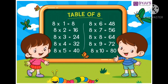Table of 8. 8 ones are 8, 8 twos are 16, 8 threes are 24, 8 fours are 32, 8 fives are 40, 8 sixes are 48, 8 sevens are 56, 8 eights are 64, 8 nines are 72, 8 tens are 80.